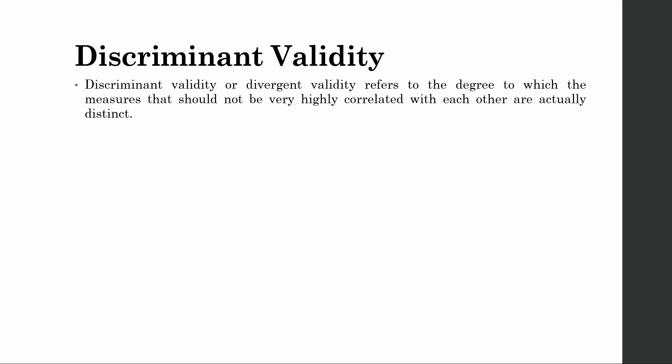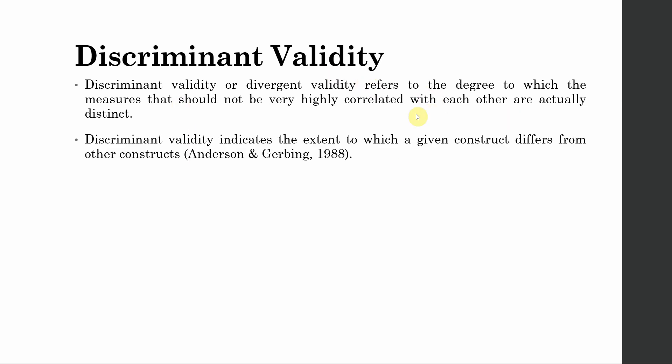Discriminant validity, or divergent validity, refers to the degree to which measures that should not be very highly correlated with each other are actually distinct. We use discriminant validity to establish distinctiveness of constructs. In social sciences or survey-based research, the constructs may overlap, so in order to be sure that these constructs are actually different from each other, we try to establish discriminant validity.